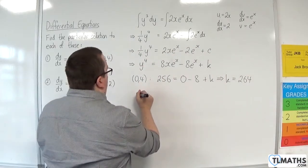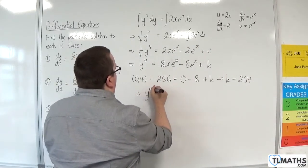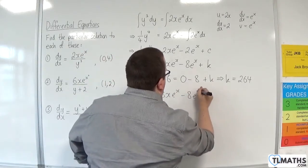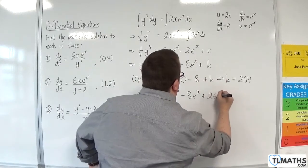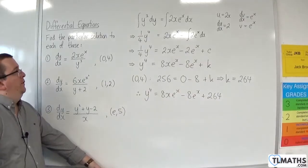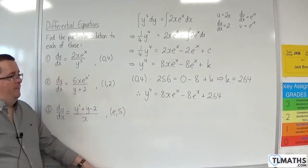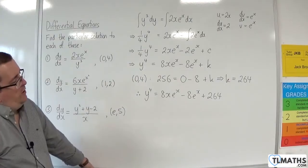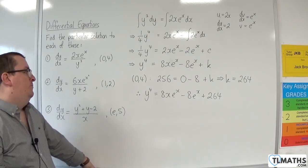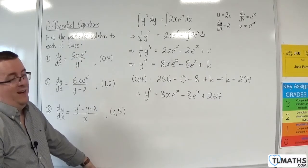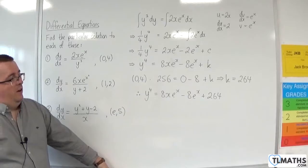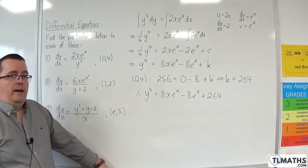So therefore, y to the 4 is equal to 8x e to the x, take away 8e to the x, plus 264. And that is my particular solution to this differential equation. You might be wondering, could I write it as y equals? You could, but the problem is you're going to get plus or minus involved when you do the fourth root, and I'd prefer not to. So I'll leave it like that.